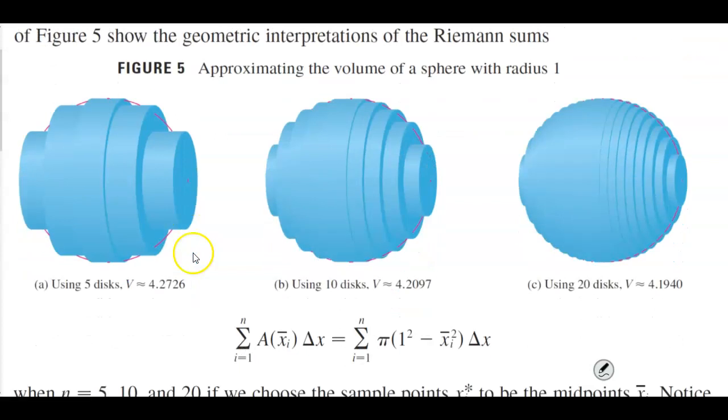For this first one in part A, we're using 5 disks. For part B, we're using 10 disks, and then for part C, we're using 20 disks.